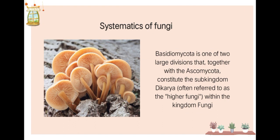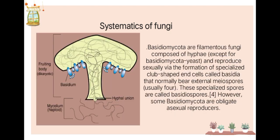Basidiomycota is one of the large divisions that, together with Ascomycota, constitutes the sub-kingdom Dikarya, often referred to as the higher fungi within the kingdom fungi. Basidiomycota are filamentous fungi composed of hyphae — except for basidiomycota yeasts — and reproduced sexually via formation of specialized club-shaped cells called basidia, that normally bear external spores. These specialized spores, usually four in number, are called basidiospores.